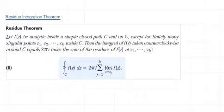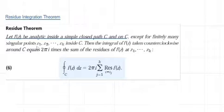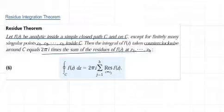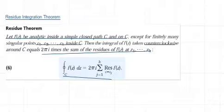The theorem statement says that let F be analytic inside a simple closed path C and on C, except for finitely many singular points Z1, Z2, Z3, up to Zk inside C. Then the integral of F(z) taken in the counterclockwise direction around C is equal to 2πi times the sum of the residues of F(z) at Z1, Z2, Z3, up to Zk.